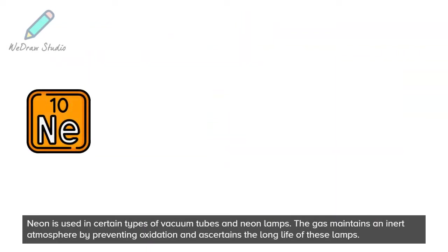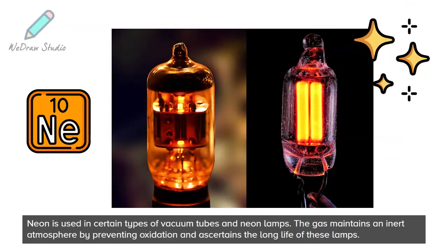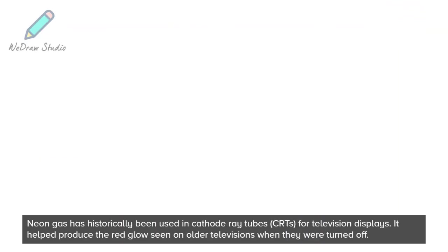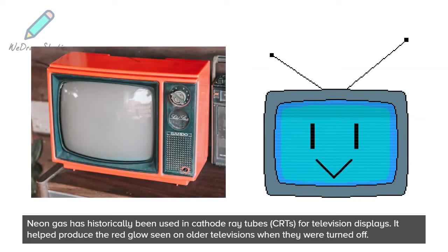Neon is used in certain types of vacuum tubes and neon lamps. The gas maintains an inert atmosphere by preventing oxidation and ensures the long life of these lamps. Neon gas has historically been used in cathode ray tubes, CRTs, for television displays.